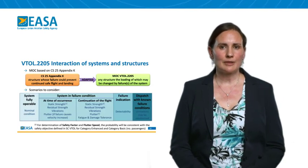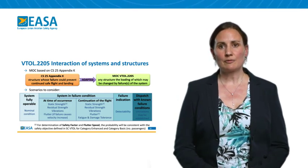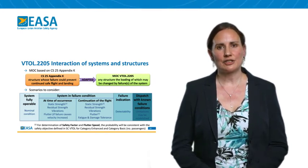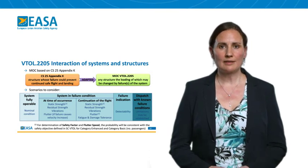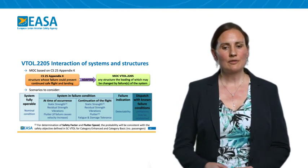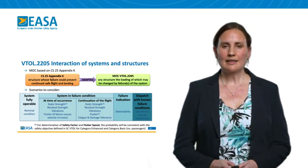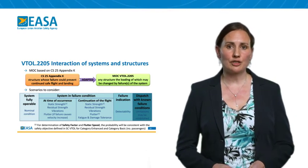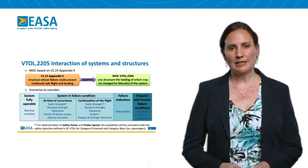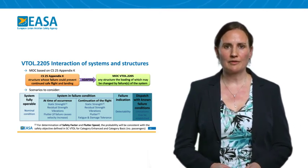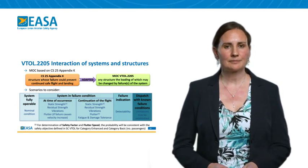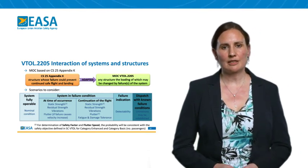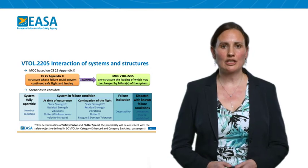This table shows the scenarios to consider. These include the system fully operable, which are the nominal design flight cases. For the system in the failure condition, two scenarios must be considered: at the time of occurrence, and for the continuation of the flight. At the time of occurrence, the static strength should be evaluated taking into account the changing loading due to the failure. The factor of safety applicable can be reduced from the typical 1.5 based on the probability of failure. The durability should also be re-analysed to ensure the residual strength capability of the structure is able to maintain the change in loading due to the failure.